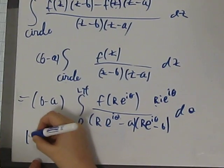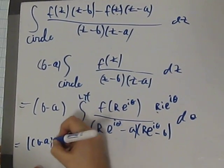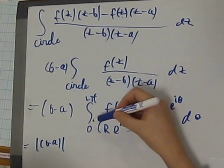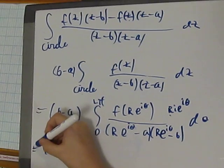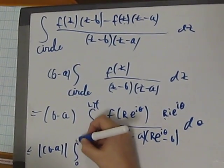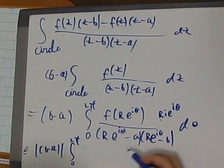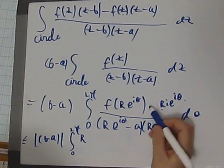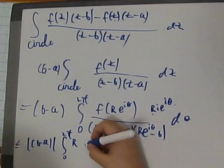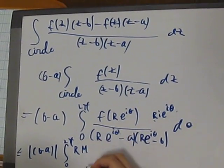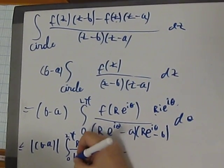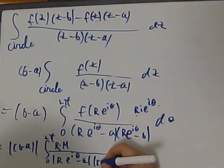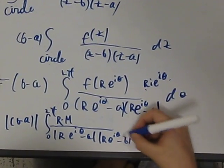So, this is the same as the modulus of B minus A times the modulus of this is less than or equal to the modulus. Right? This is less than or equal to this times the interval from zero to 2π of the modulus of this. But, the modulus of this is one. So, we have R times this, that is bounded by hypothesis. Let's call it M, the bound.